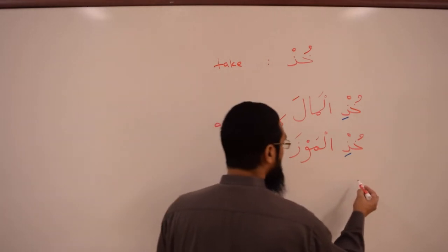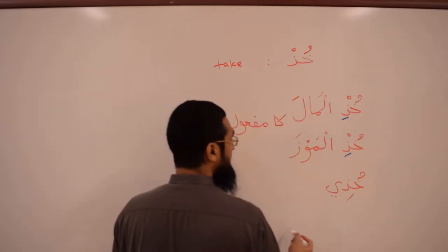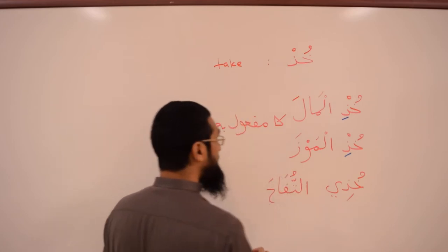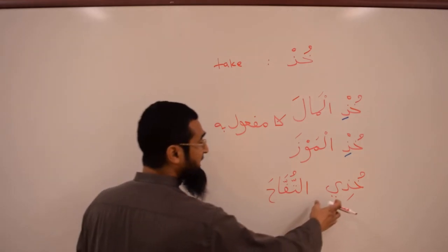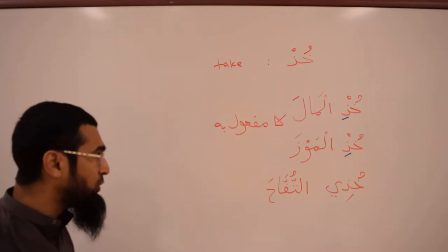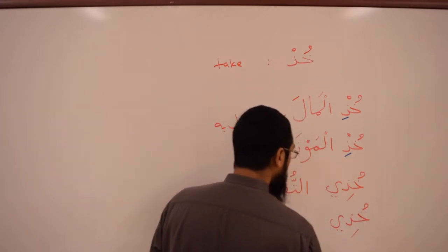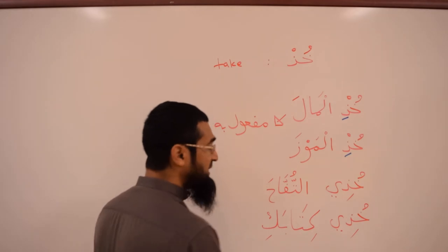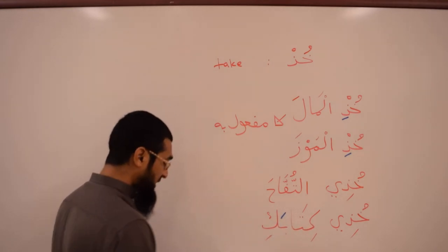If you speak to a female, you say khudhi. For example: Khudhi al-tuffaha — take the apple. Or: Khudhi kitabaki, ya Aisha — take your book. Because it is the maf'ulun bihi, it takes a fatha: khudhi kitabaki.